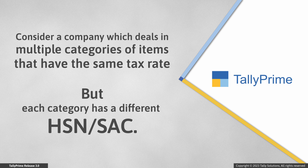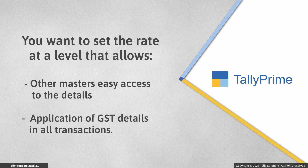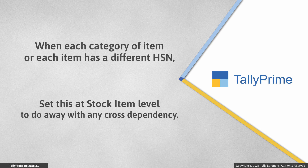To see how this works, let us consider a company which deals in multiple categories of items that have the same tax rate, however each category has a different HSN or SAC. In this scenario, you want to set the rate at a level which gives other masters easy access to the details and allows application in all transactions. And since each category of item or each item has a different HSN, you will want to set the GST Rate details at stock item level to do away with any cross dependency.